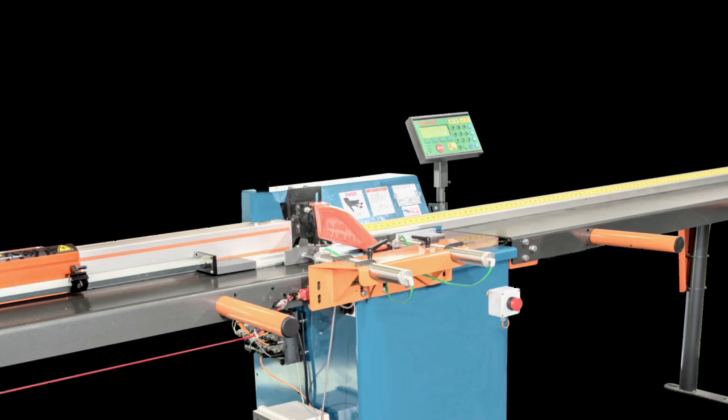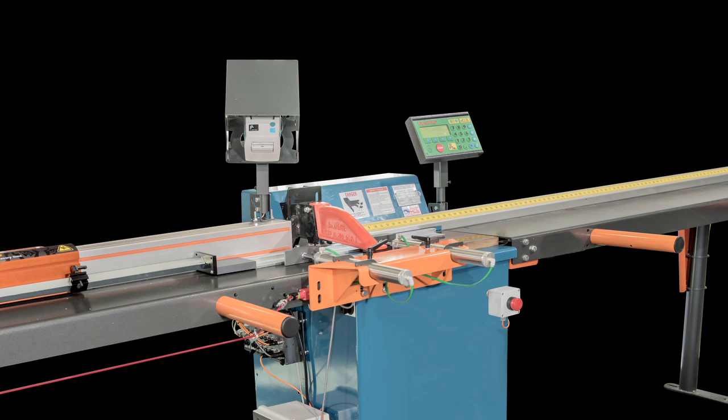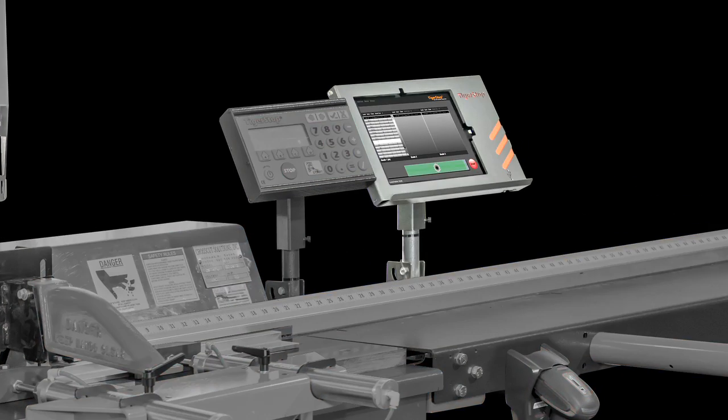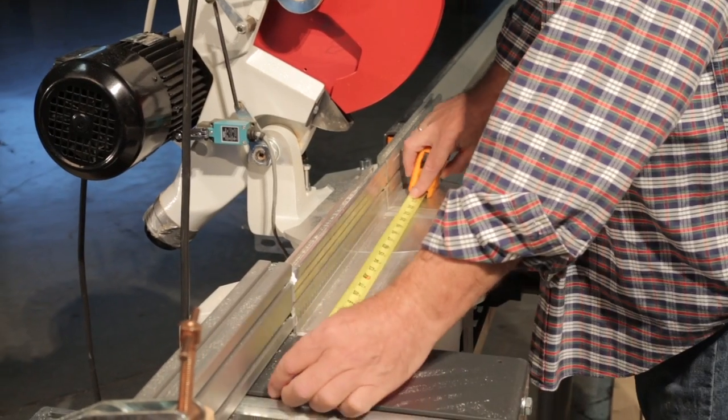You can also add the ability to download cut lists, do label printing, barcode scanning or add the Tiger Touch to manage your machine on a touch screen.